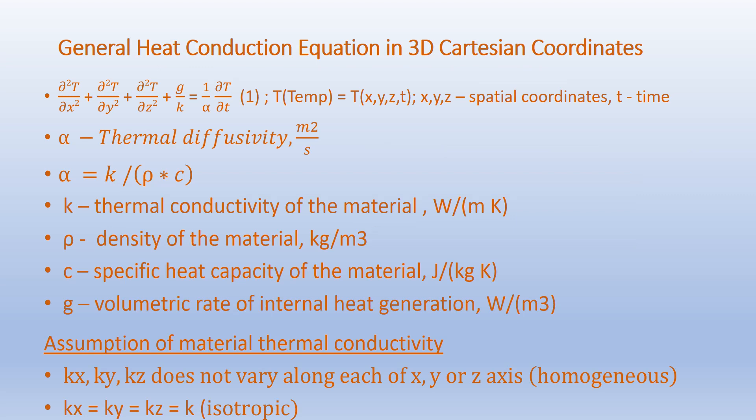Going back to the general heat conduction equation in 3D Cartesian coordinates, we have: d²T/dx² + d²T/dy² + d²T/dz² + g/k = (1/α)(dT/dt). Here uppercase T is temperature and is a function of spatial coordinates x, y, z and time t. Alpha is the material property called thermal diffusivity given in m²/s, where α = k/(ρc). Here k is thermal conductivity in W/(m·K), ρ is density in kg/m³, c is specific heat capacity in J/(kg·K), and g is the volumetric rate of internal heat generation in W/m³.